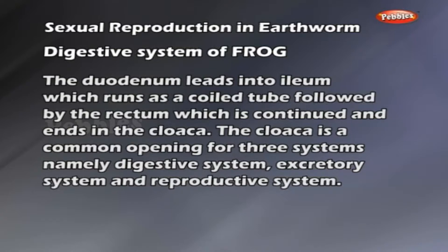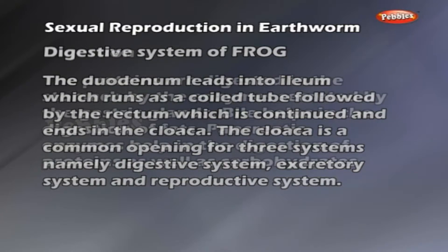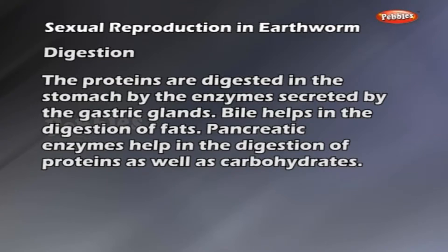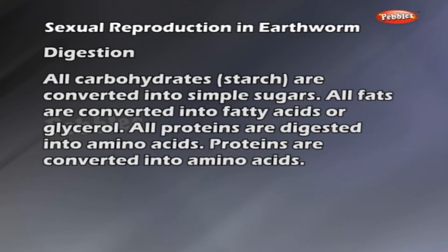Proteins are digested in the stomach by enzymes secreted by the gastric glands. Bile helps in the digestion of fats. Pancreatic enzymes help in the digestion of proteins as well as carbohydrates. All carbohydrates and starch are converted into simple sugars. All fats are converted into fatty acids or glycerol. All proteins are digested into amino acids.